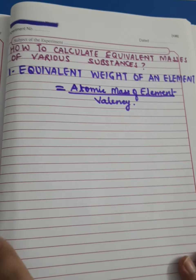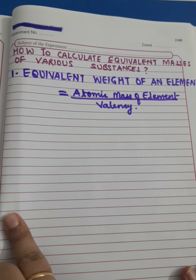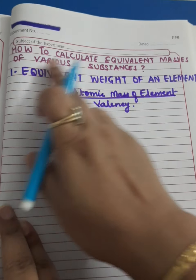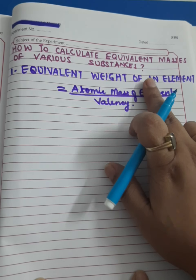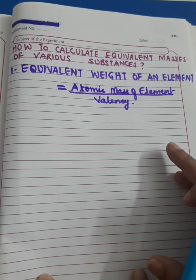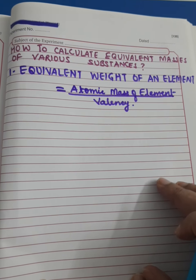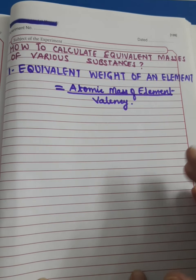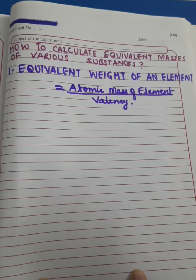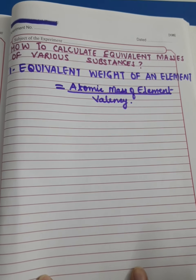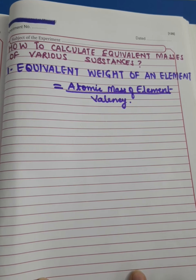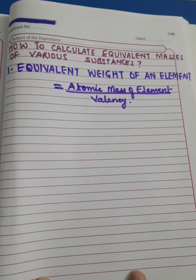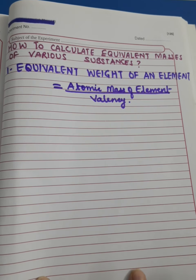Hello dear students. In this video we are going to study how to calculate equivalent masses of various substances. I will be teaching you the formula to calculate equivalent mass of different types of substances like element, salt, acid, base, reducing agent, oxidizing agent and all.